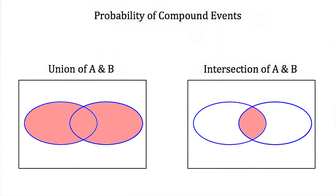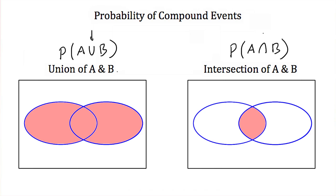Now we know what a Venn diagram is. Let's talk about some vocabulary common when discussing the probability of compound events. If we say the union of event A and event B — sometimes written as the probability of the union of A and B, represented by a U — that means all of the events that satisfy both A and B. The intersection of A and B, indicated by an upside-down U, means all of the outcomes in the intersection of our Venn diagram, or that satisfy both A and B.